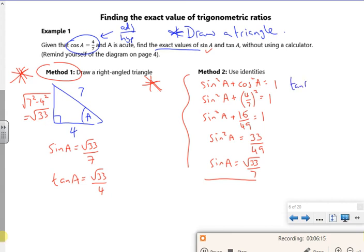And I know that tan is sine over cos. So tan, so sine was root 33 over 7, cos is 4 over 7. The 7s will cancel, so root 33 over 4.